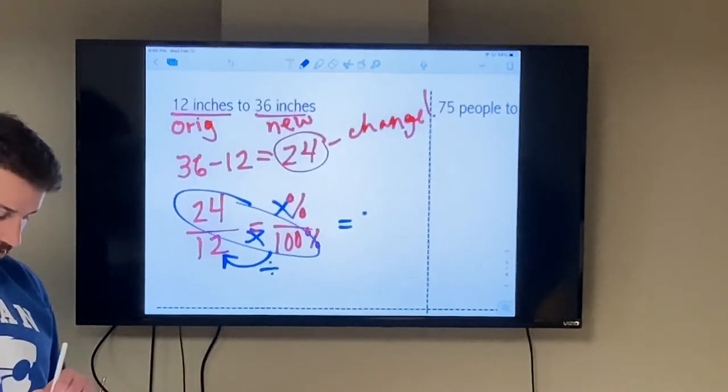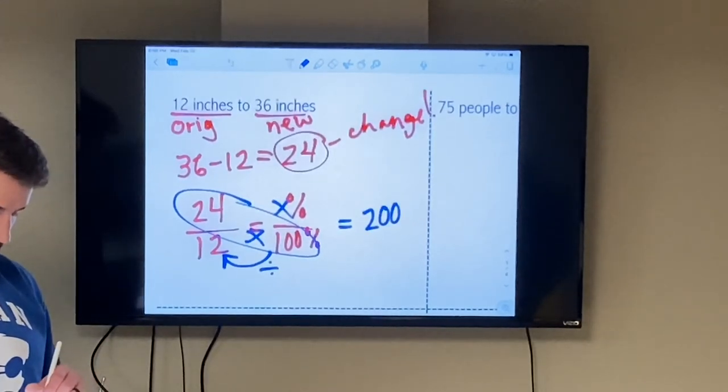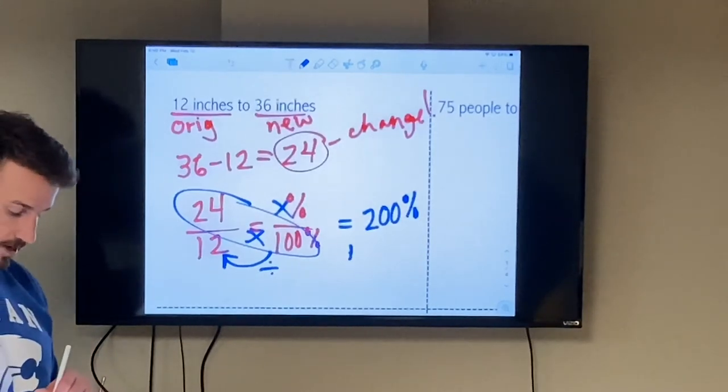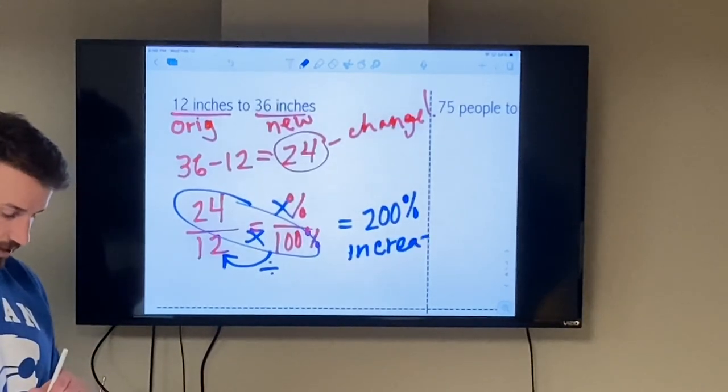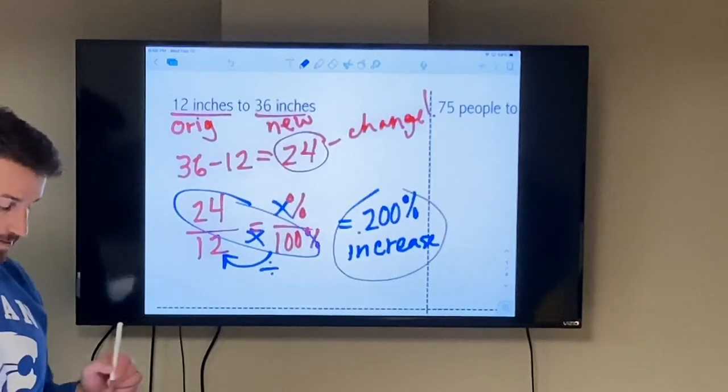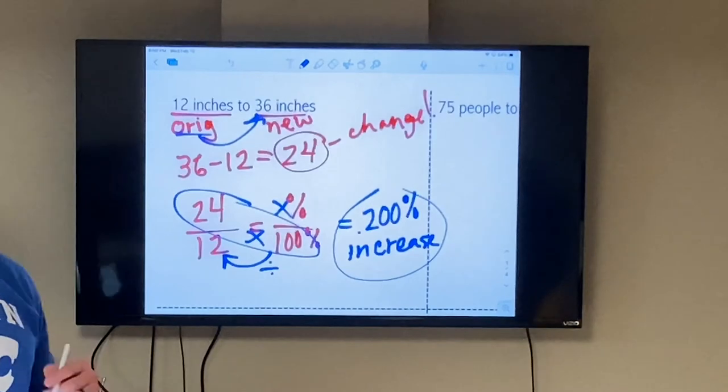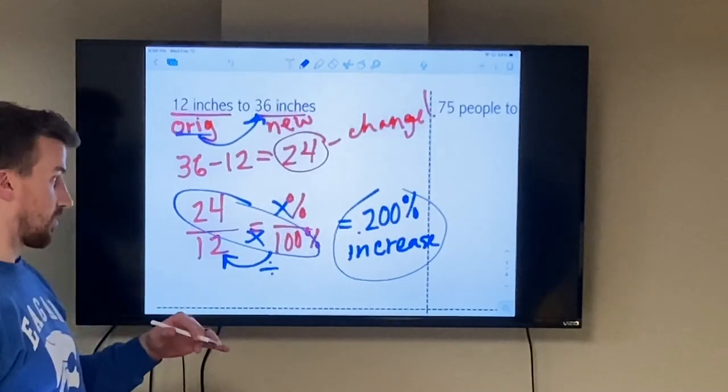Giving me 200% change, which is an increase. Now I know it's an increase because if I looked at the original amount to the new amount, it went up. So that's how I tell if it's an increase or decrease. Increase is if it goes up, decrease is if it goes down.